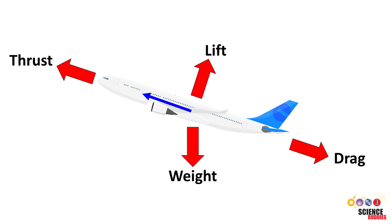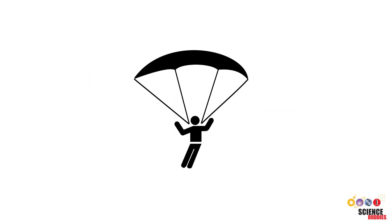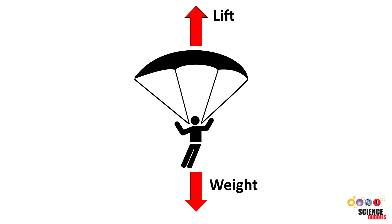The important thing to remember is that drag always points opposite the direction of motion, and we can apply this to some other situations. For example, what about a person or object falling with a parachute? The person's weight pulls them down, but what about the upward force generated by the parachute? You might be tempted to call this force lift since it points up, but since it points opposite the direction of motion, this force is actually drag.